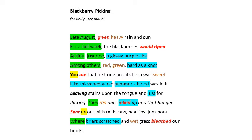Have a look then at the modifiers: heavy, red, green, sweet, red, wet. They're quite positive; they construct a very sensual visual picture of what it's like. It's fresh, it's alive. Last of all, look at the imagery: the glossy purple clot, hard as a knot, like thickened wine, summer's blood, lust, inked up, briars scratched. These images are more powerful — they're the poetic images and the force of the poem — and they tend to be more negative.